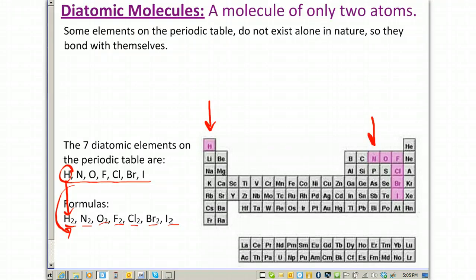We have hydrogen, and then over here, we have nitrogen, oxygen, fluorine, chlorine, bromine, and iodine. So, if we had iron, for example, I can have iron alone in nature because it's not diatomic. However, nitrogen can never be written as just N. Because it's diatomic, it actually has to be N2.